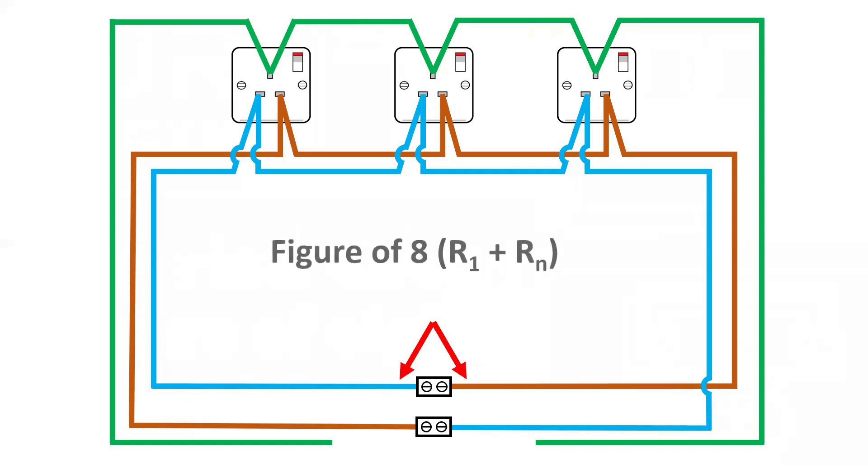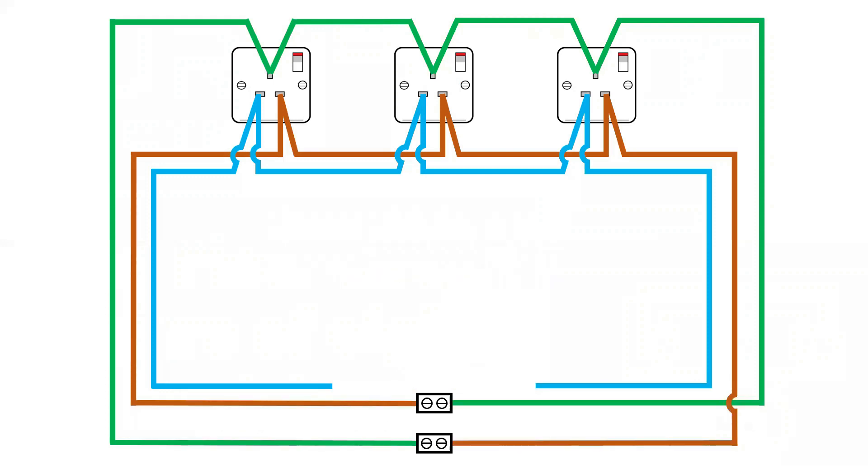The line and neutral crossed over like this is known as big R1 plus big Rn. This diagram shows the line and CPC connected in the same way, and on a ring we call this big R1 plus big R2. Notice that now we have connected the ring into a larger resistance, we are using capital R's to represent this, so do not get confused between the little r's used for measuring end-to-end of a ring final circuit from the previous video.